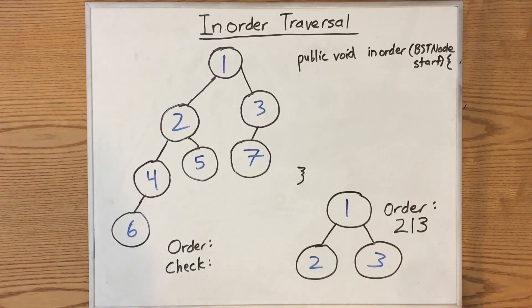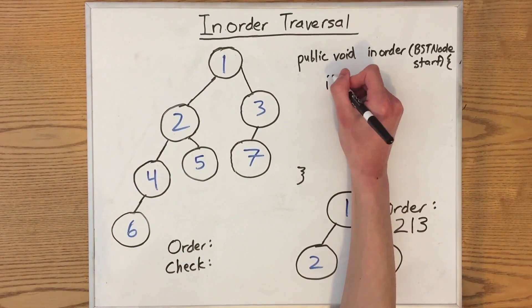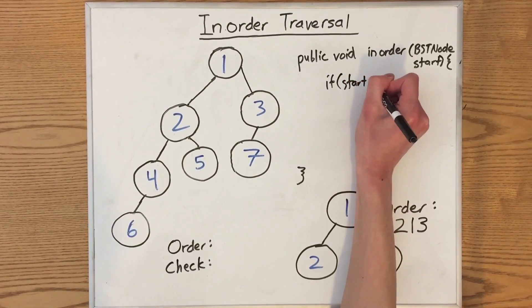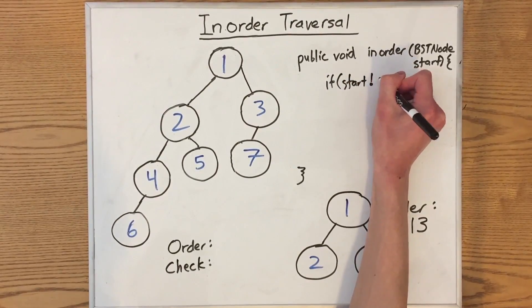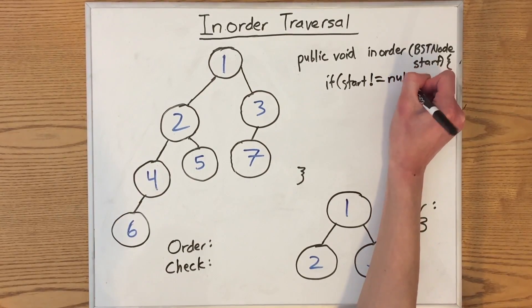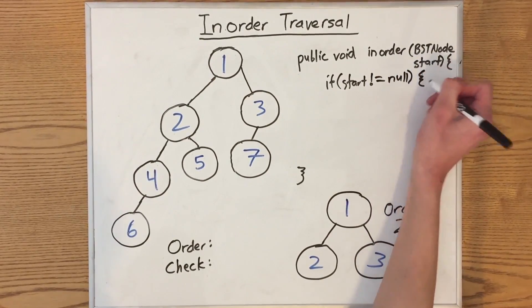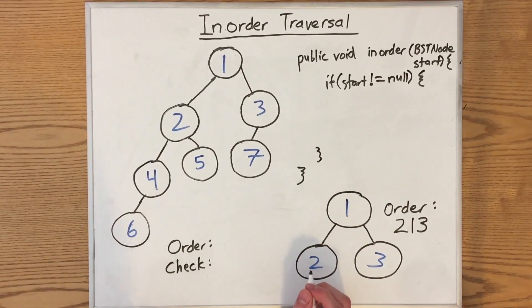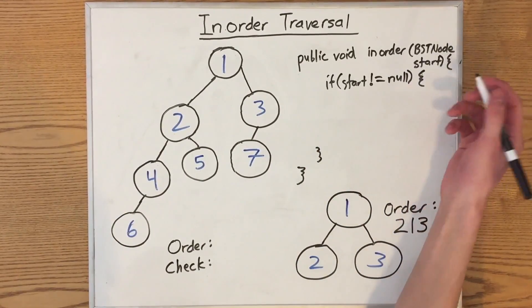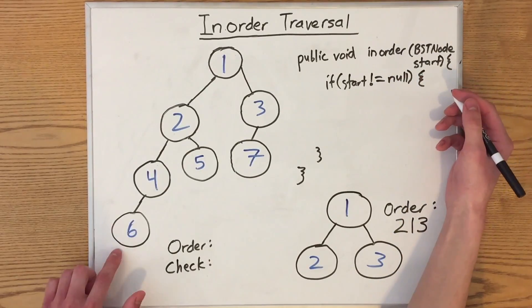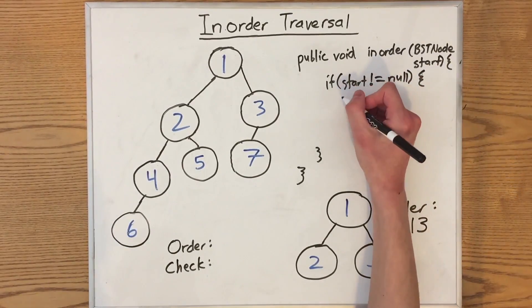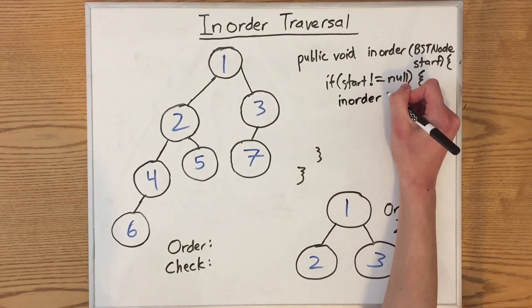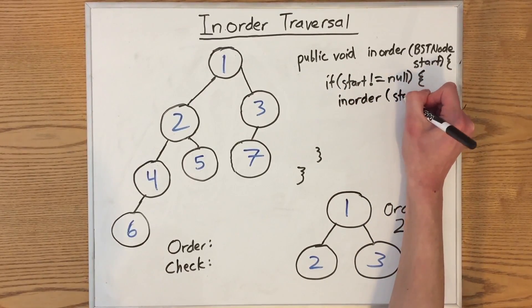The code for this looks a lot like the code for pre-order. The first thing that we have to do, as usual, is to check if start is equal to null or not. If it's equal to null, it means that the node that you're looking at is null, which could be the case if you were just on a leaf and you were trying to check its children. So the first thing that we have to do is call inorder on the left subtree, which is start.left.